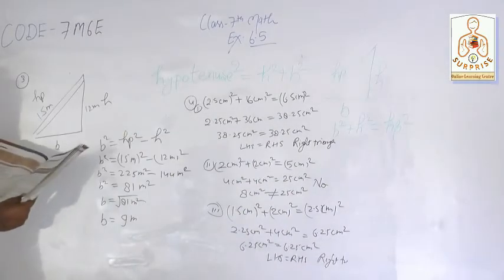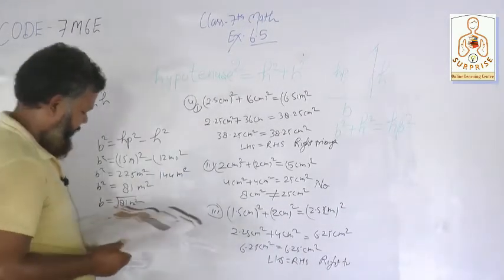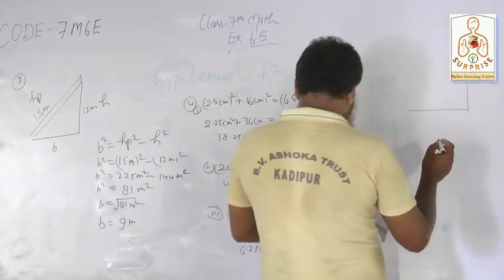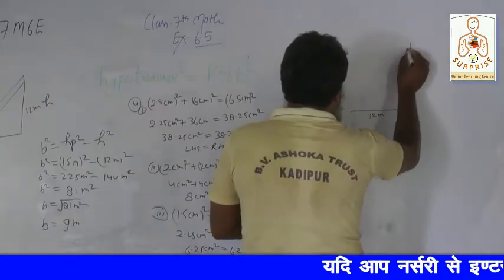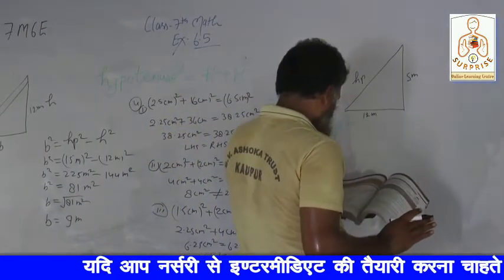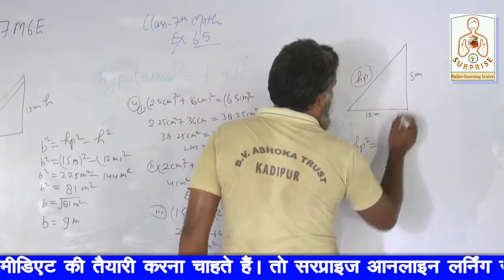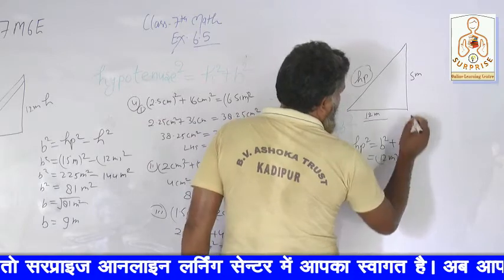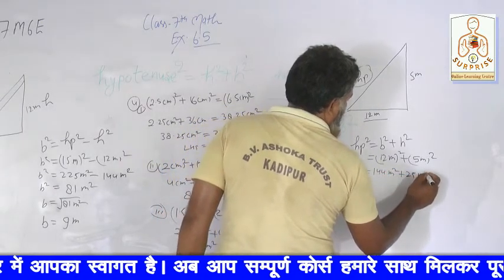Question number 5: A tree is broken at a height of 5 meters from the ground and its top touches the ground at a distance of 12 meters from the base of the tree. Find the original height. Let's make a figure: the broken part is 5 meters height, the ground distance is 12 meters. HP square is equal to base square plus height square: 12 meters square plus 5 meters square = 144 meters square plus 25 meters square.